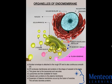The endomembrane system is made of the different membranes that are basically suspended in the cytoplasm within eukaryotic cells. These membranes divide the cell into functional and structural components, or organelles.